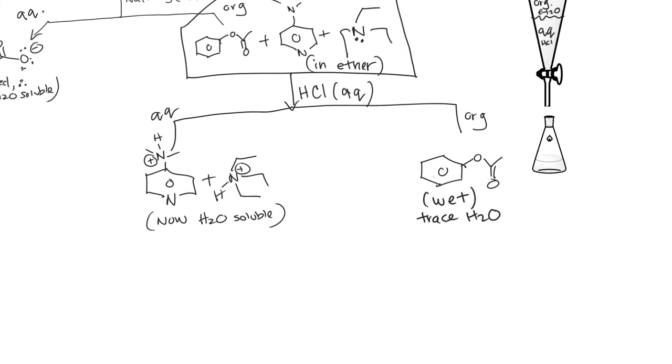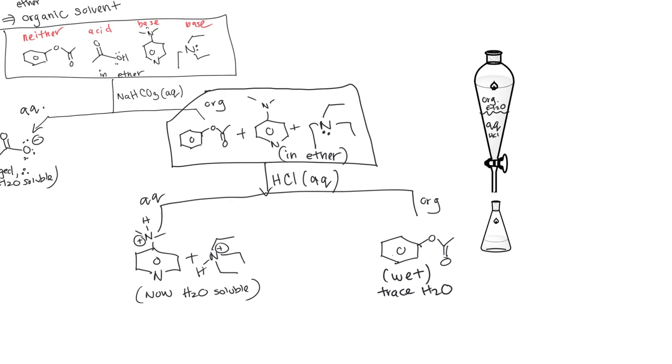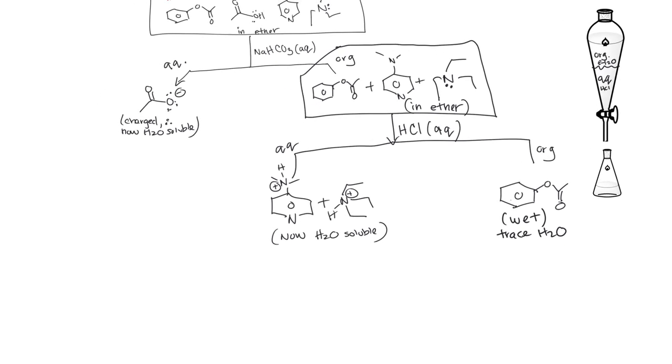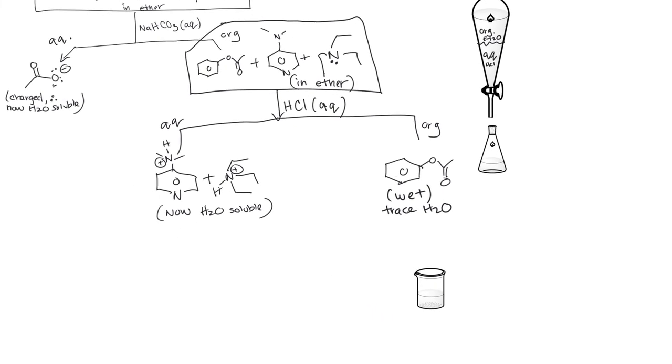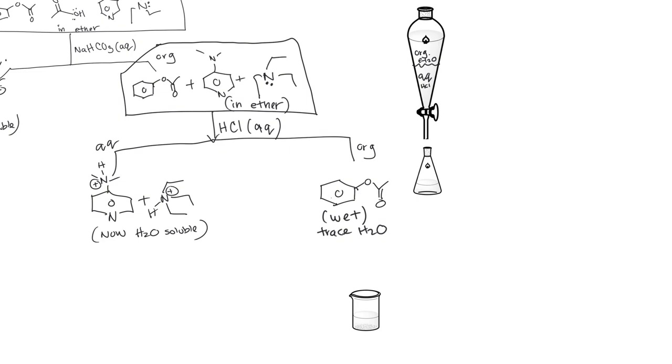And at that point, we're not using the separatory funnel anymore, but it's still considered a separation process because in the separation scheme, we are removing things and isolating them. So flow charts can apply to more than just an extraction, of course. So right here would be an example of what it would look like after we collected. Perhaps,